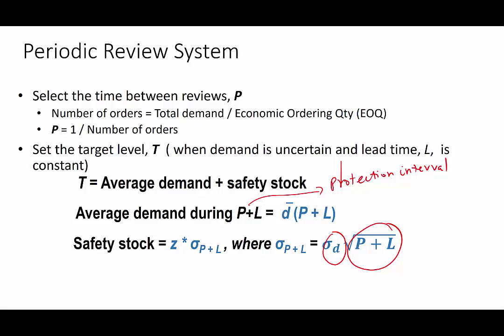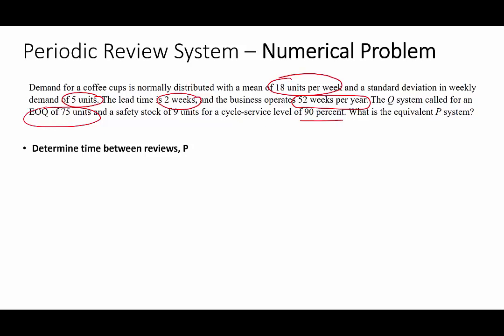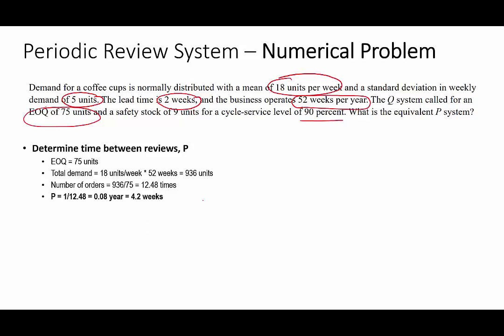Let's look at a numerical example. The demand per week is 18 units, the standard deviation per week is 5 units, lead time is 2 weeks, the business operates for 52 weeks, EOQ is 75 units, and customer service level is 90%. The total annual demand is 18 times 52, which equals 936 units. The number of orders is 936 divided by 75, which is 12.48 times per year.